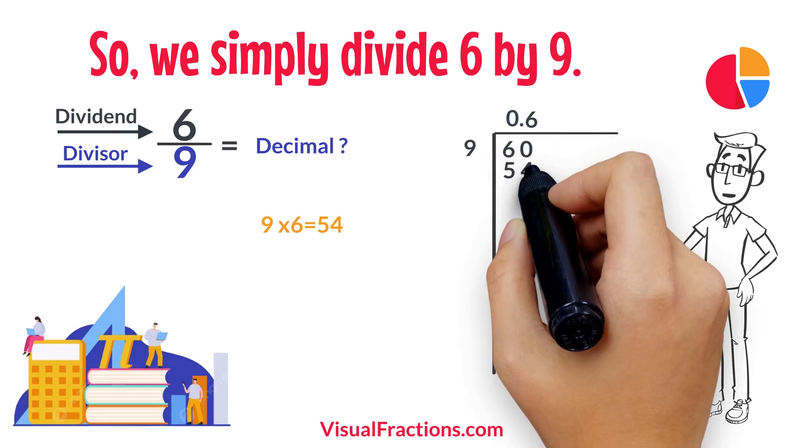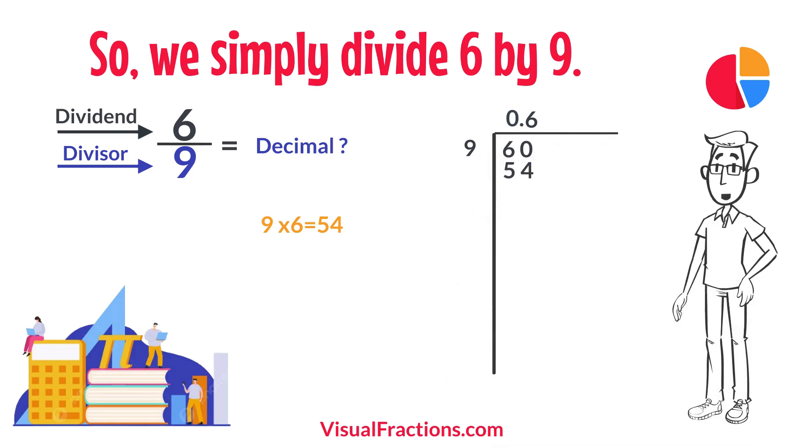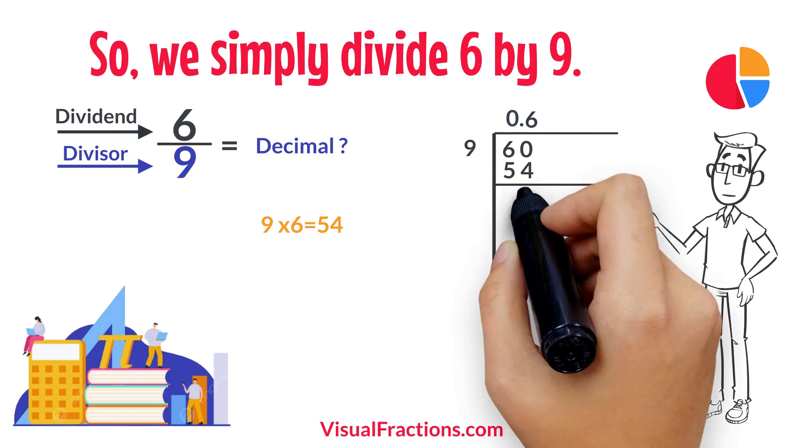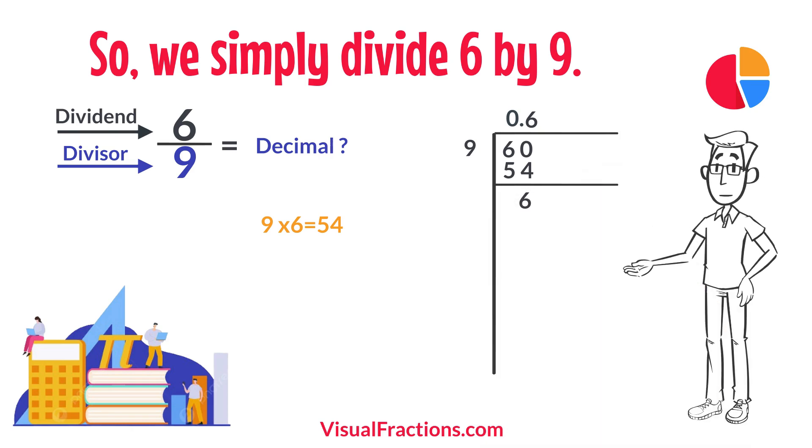Multiplying 6 by 9 gives us 54. When we subtract 54 from 60, we get a remainder of 6. Next, we add another 0 to the remainder, making it 60 again.